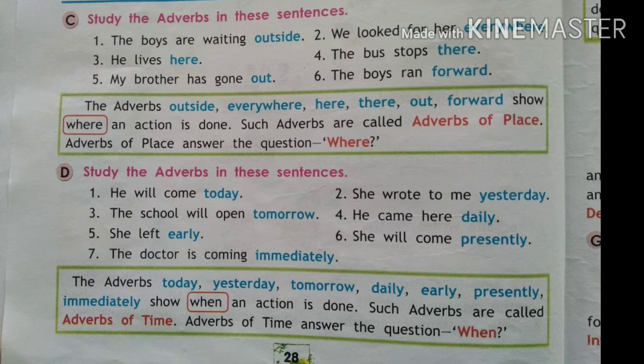In the above sentences: where are the boys waiting? Outside. We looked where? Everywhere. Lives where? Here. Stops where? There. Has gone where? Out. Ran where? Forward. So whenever we ask the question 'where?' and get an answer, we say it shows the place and it is an adverb of place. So your first adverb learned is adverb of manner, and your second is adverb of place.